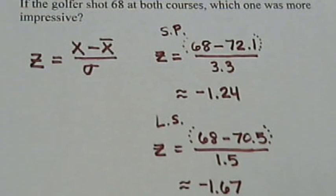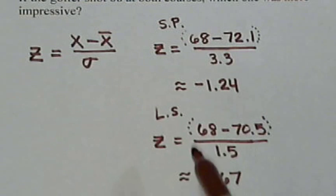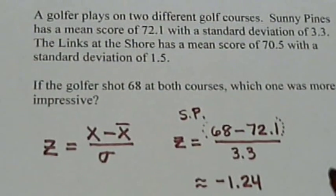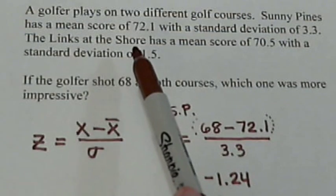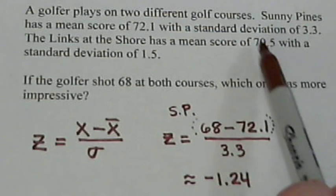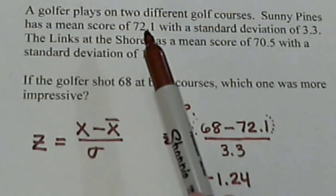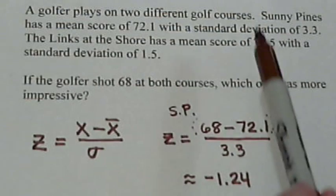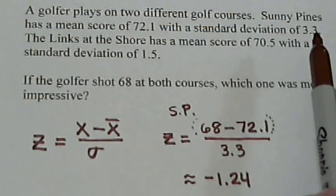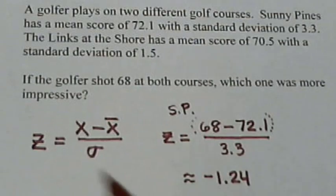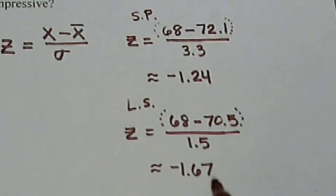Now, this is also negative because he was below the mean, again. But which one is more impressive? Well, since this z value is a little more negative, that means he was further below the mean with respect to the other golfers than at the Sunny Pines. So, even though the score of 68 is the same, his score at Links at the Shore is more impressive because most golfers are right around this average. So his 68 was quite a bit away from that compared to the other golfers. Whereas, his 68 on this course was 72.1, well, a standard deviation of 3.3 means the golfers were more erratic. So they could shoot really low scores or they could shoot really high scores there. So, the 68 was more impressive at the Links at the Shore because the z value was more negative.